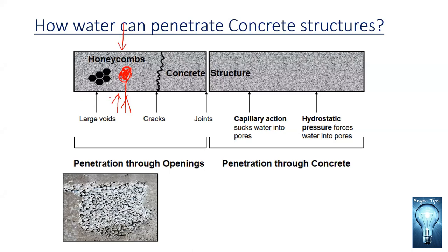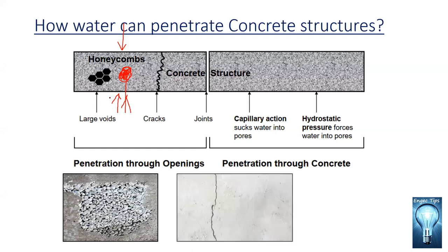Honeycombs can be caused by improper vibration, low slump, or if the slump is too high — grout can leak through the formwork — and also due to insufficient cover. These are the main causes of honeycombs. The second method of water ingress is cracks. We have to seal cracks. If we observe cracks larger than 0.5 mm during inspection, we must rectify them before applying waterproofing.